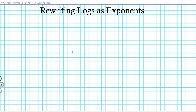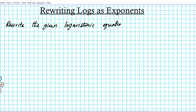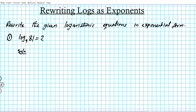The instructions for the examples we're working on are: rewrite the given logarithmic equations in exponential form. For problem number one, we have the equation log base 9 of 81 is equal to 2. The solution is as follows: log base 9 of 81 is equal to 2.